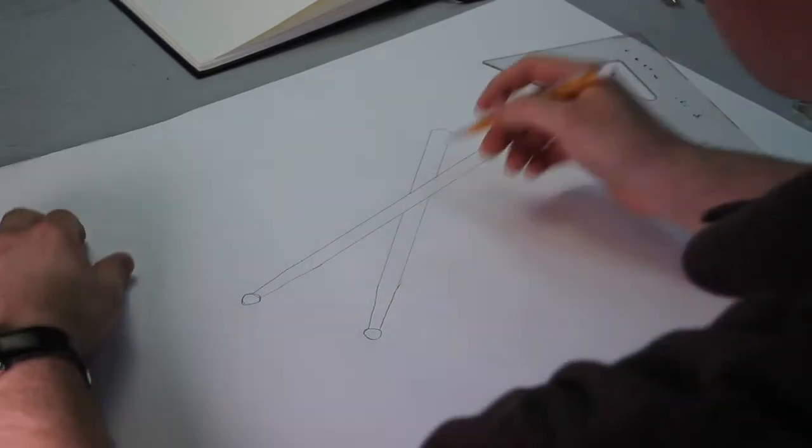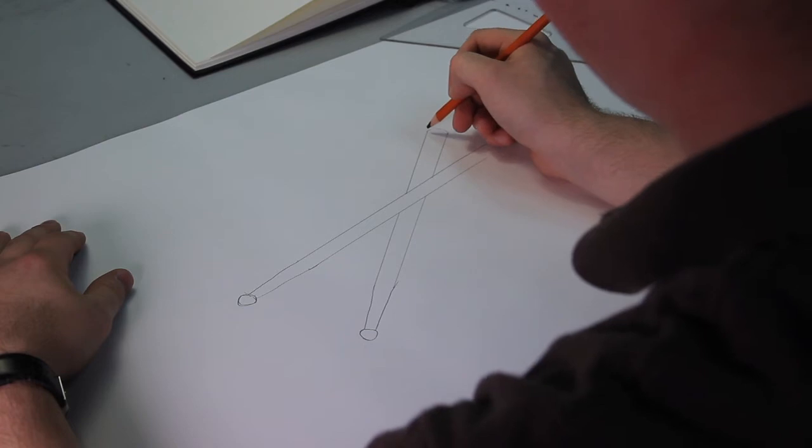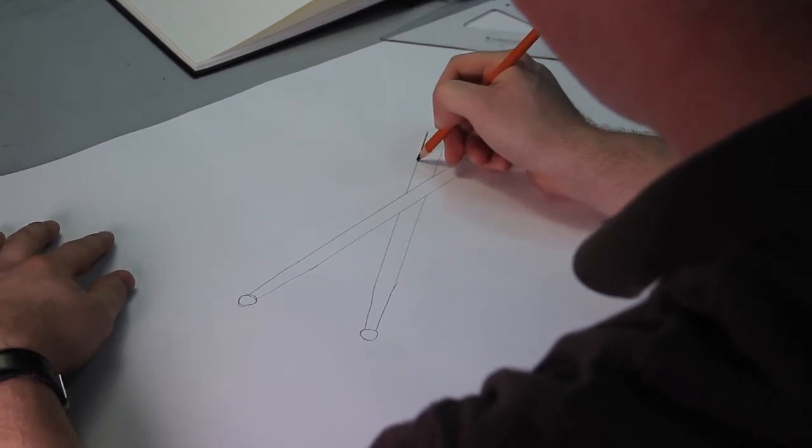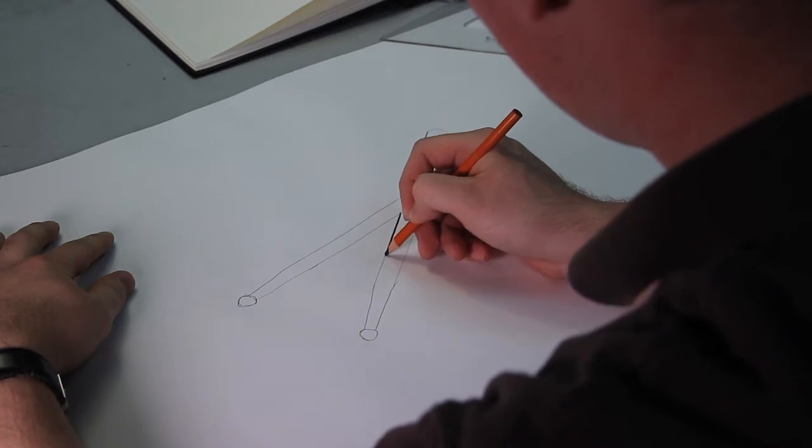Okay, and then what we'll do is we'll just take this and then we'll just outline it, make it a little bit darker, a little bit more crisp, and fix up our shape a little bit as we do it.